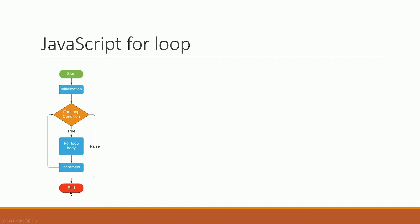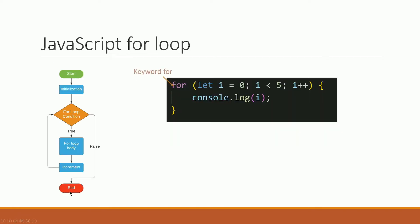We don't need to write the same code repeatedly. For the for loop, we need to use the 'for' keyword with the proper syntax. In the flow diagram, we need to use the initialization — let i equal to zero.